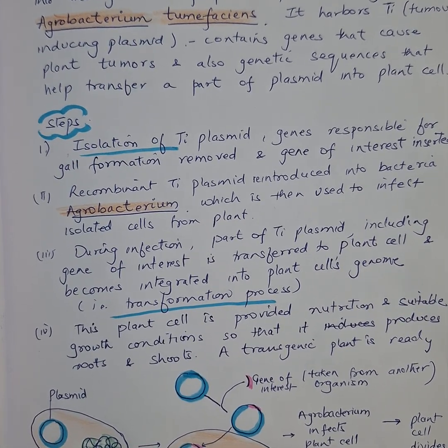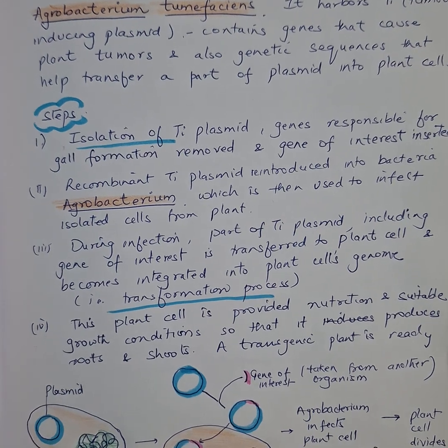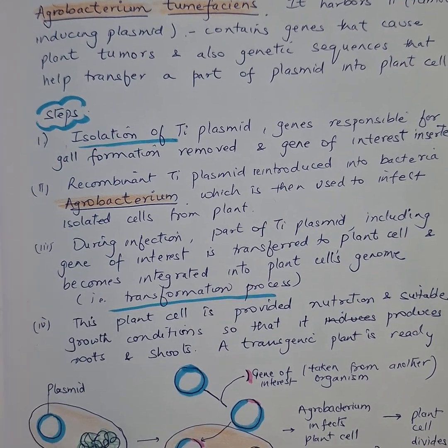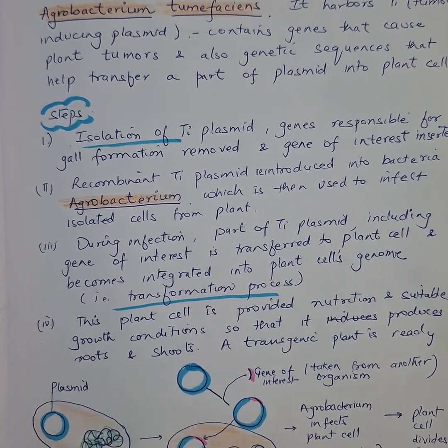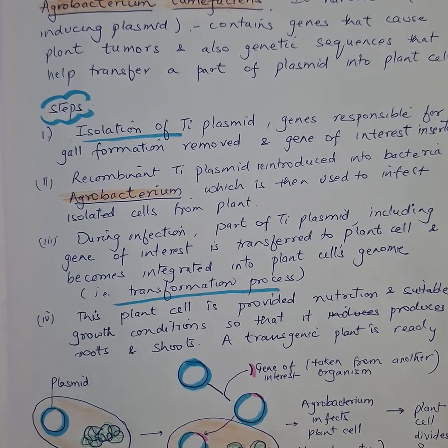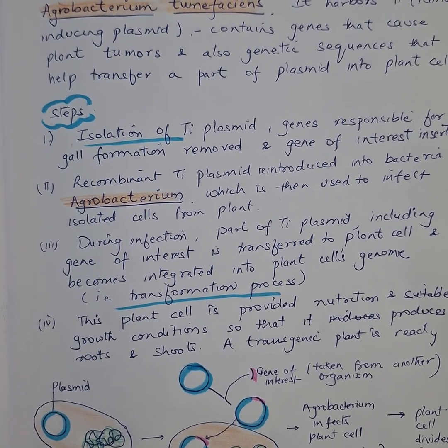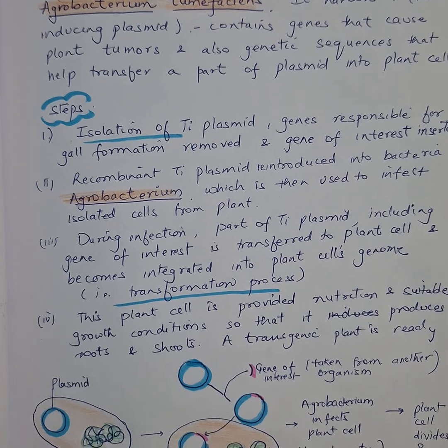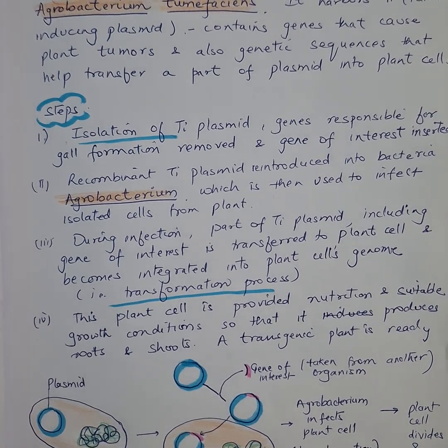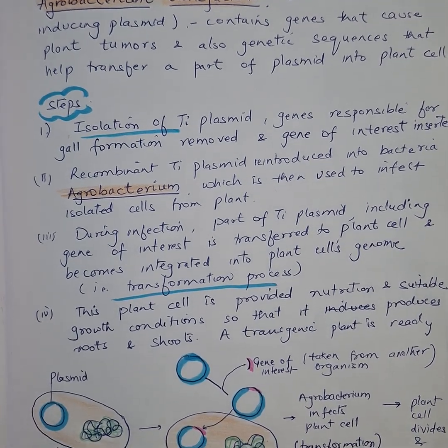Let's dive into the steps. First is the isolation of the tumor-inducing plasmid. Genes responsible for gall formation are removed, and genes of interest are inserted.